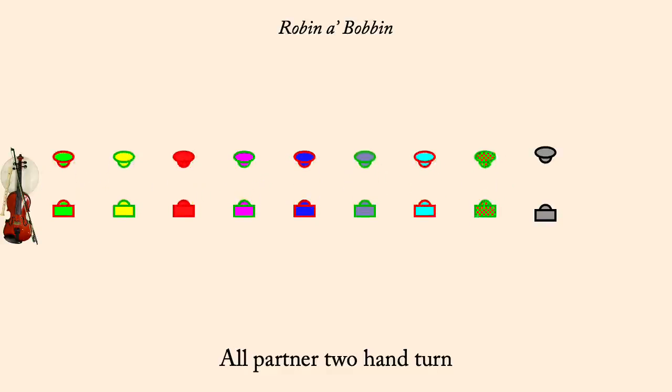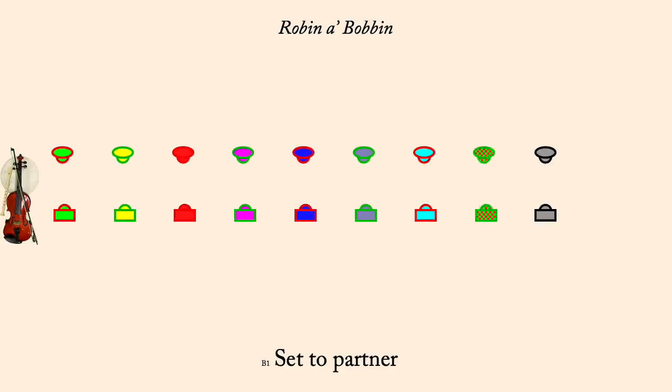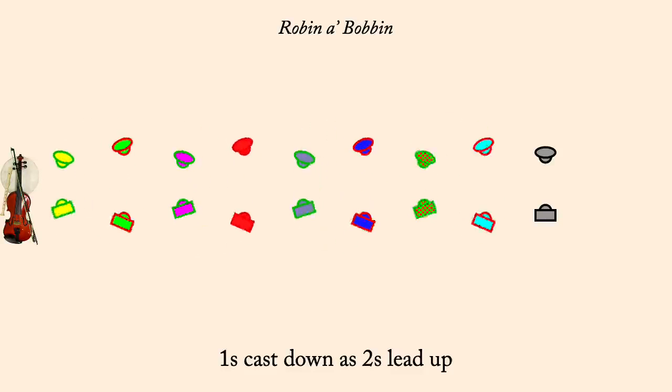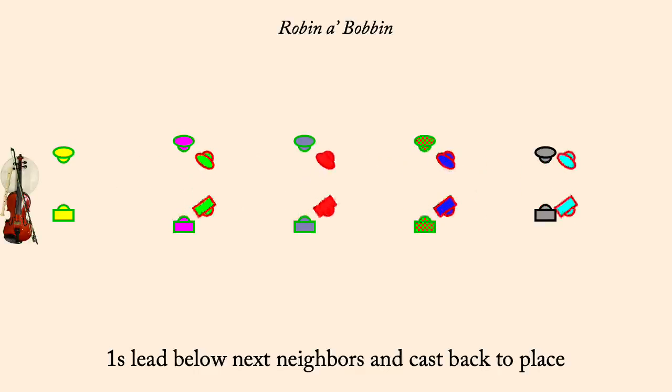Set to partner. Ones cast down as twos lead up. Ones lead below next neighbors and cast back to place.